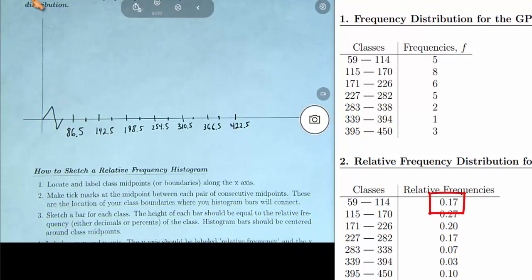So we're going to sketch a bar whose height is .17. We need to probably scale our y-axis before we do that. Notice in the relative frequency table that 27% or .27 is the largest relative frequency.